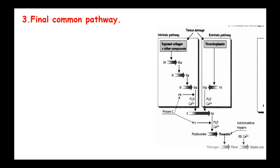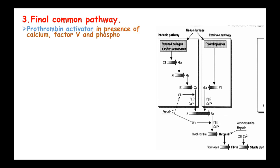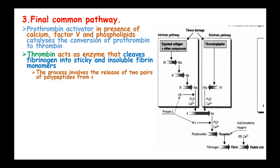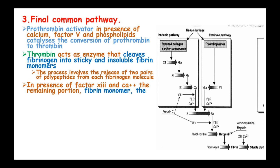In the final common pathway, prothrombin activator in the presence of calcium, factor V, and phospholipids catalyzes the conversion of prothrombin to thrombin. Thrombin acts as an enzyme that cleaves fibrinogen into sticky and insoluble fibrin monomers. The process involves the release of two pairs of peptides from each fibrinogen molecule, and in the presence of factor XIII and calcium ions, the remaining fibrin monomers polymerize with another monomer molecule to form stable fibrin.